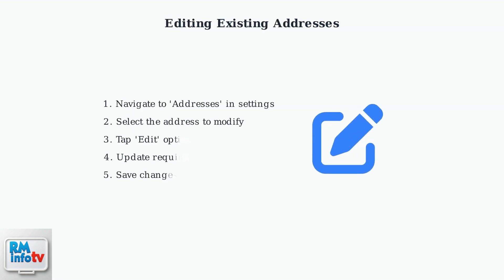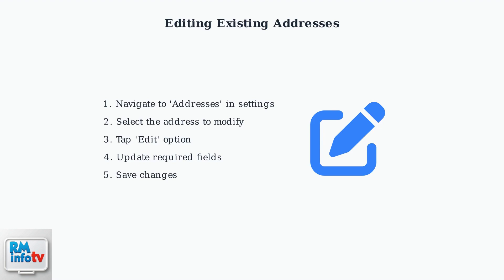Editing an existing address is straightforward. Navigate to Addresses in your account settings, select the address you want to change, tap Edit, update the necessary fields, and save your changes.